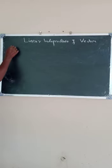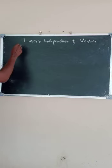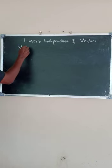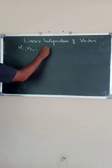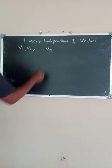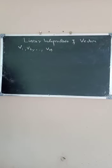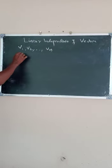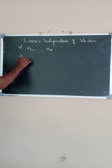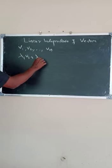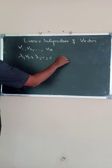First definition: if V1, V2, ... Vn are vectors, then the expression lambda 1 V1 plus lambda 2 V2 plus ...